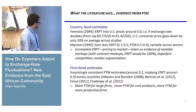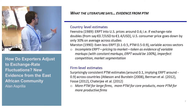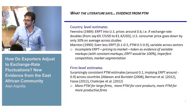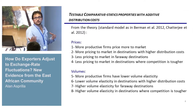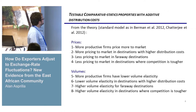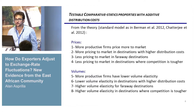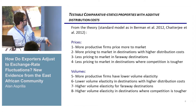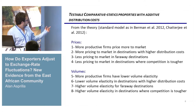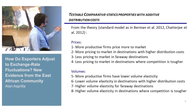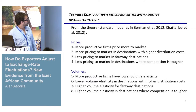The basic results from the literature are: more pricing to market for large firms, more pricing to market for core products, and more pricing to market for more productive firms. Standard trade models predict that more productive firms price more to market, there is more pricing to market in destinations with higher distribution costs, less pricing to market in faraway destinations, and less pricing to market where competition is tougher. For volumes, more productive firms have lower volume elasticity, and higher volume elasticity arises in faraway or more competitive destinations.